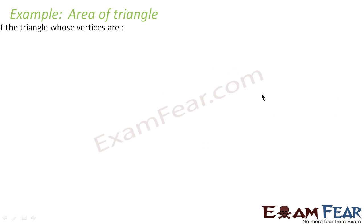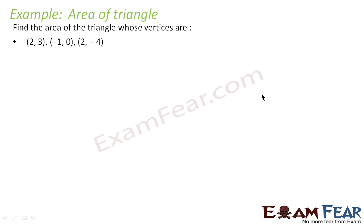So we have to find the area of the triangle whose vertices are (2, 3), (-1, 0), and (2, -4).